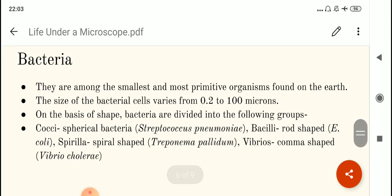Moving on to bacteria. Now bacteria are among the smallest and the most primitive organisms found on earth. Primitive you all know. Very ancient, very old. Their existence chronologically, if you see, they are very old. They have been there since ages on planet earth. The size of bacterial cells varies from 0.2 to 100 microns. This is written in your book. Underline this.